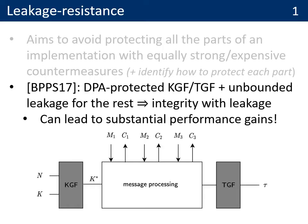For example, in 2017, Bertie and co-authors showed that if you want to encrypt and authenticate a message, it is possible to generate a fresh key with a key generation function that is DPA secure and to compute a tag with a tag generation function that is DPA secure, while leaving all the rest of the computation leaking in an unbounded manner, which can of course lead to substantial performance gains.